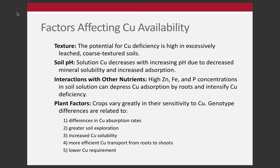Factors affecting copper availability include texture, pH, interactions with other nutrients, and plant factors. Sandy soils — low organic matter situations — are where we're most often going to see copper deficiency. As pH increases, copper availability decreases. Thinking about plant factors, the genotype or variety can be very sensitive. You might grow two varieties of wheat and find deficiency in one but not the other — that could be a genotype effect. There are a number of different mechanisms listed here.